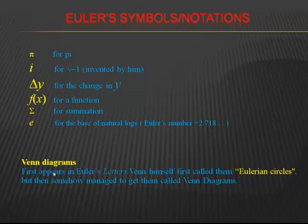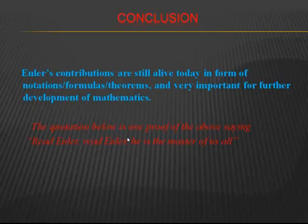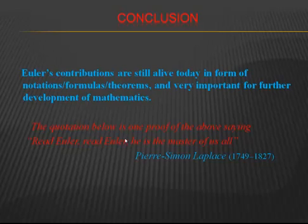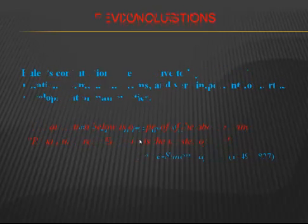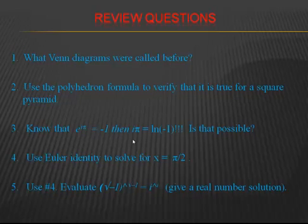What is now called the Venn diagram was previously known as the Euler circle, and even Venn himself called it the Euler circle before it was later renamed the Venn diagram. In conclusion, Euler's contributions are still alive today in the form of notation, formulas, and theorems, and are very important for the further development of mathematics. As Pierre-Simon Laplace, the French mathematician, said: 'Euler is the master of us all.'